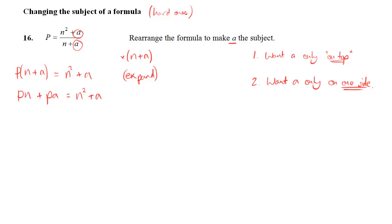Now we want to get all our A's on one side. It doesn't really matter which, but I'm going to go with the left, which means the A, the plus A on the right, needs to go. So we subtract A from both sides to get rid of it. So on the left we have PN plus PA minus A, and on the right we just have N squared.